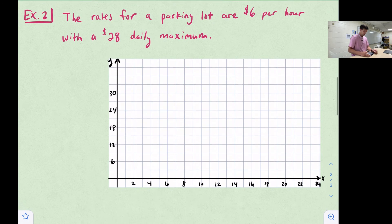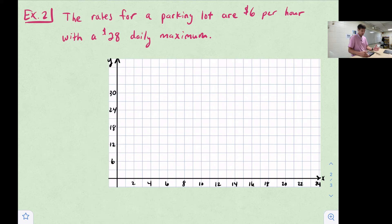Next example, it gives us a little bit of a scenario. It says the rates for a parking lot are $6 per hour with a $28 daily maximum. We can actually write a step function for this and graph it. Let's write our step function first.